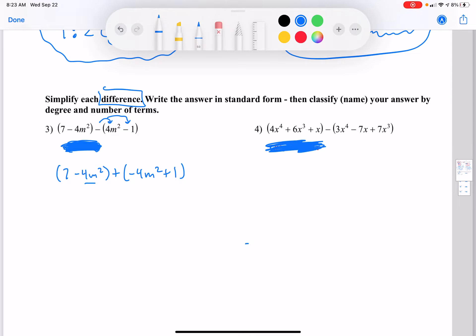So we're going to combine now. And I'm going to combine the biggest exponent first so I don't have to rewrite it later. That's negative 8m squared, and this is going to be plus 8.